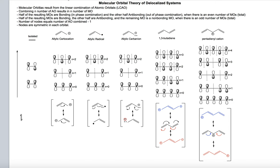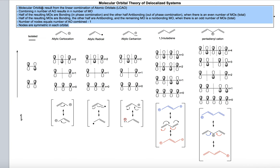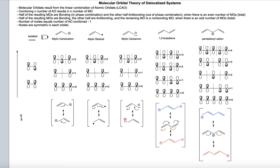Molecular orbitals result from the linear combination of atomic orbitals. When we talk about linear combination of atomic orbitals, we are referring to mathematically combining the wave function solutions for each of these atomic orbitals, thus generating a new set of solutions — a new set of equations. So we are getting a quantitative number for the energy level of each molecular orbital, information about the electronic density over each atom, and also about the geometry of the molecule.